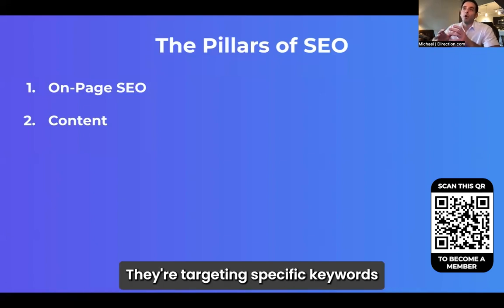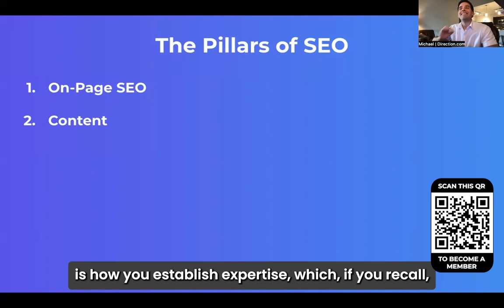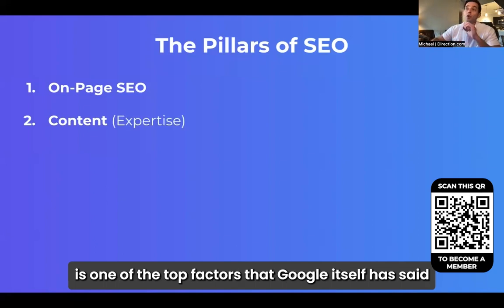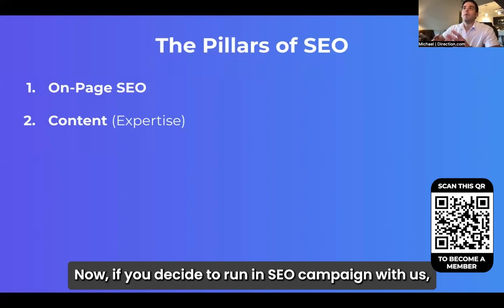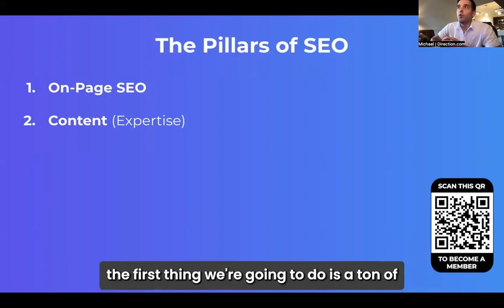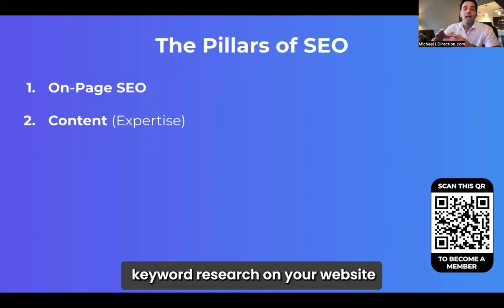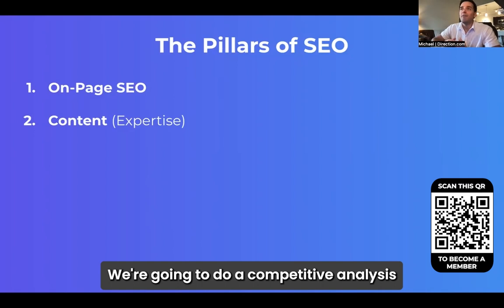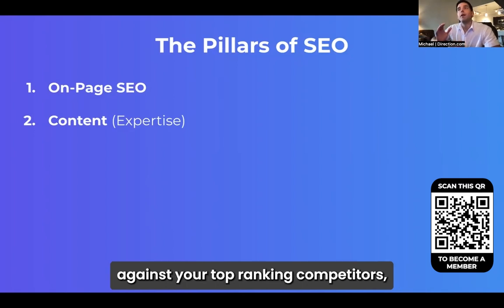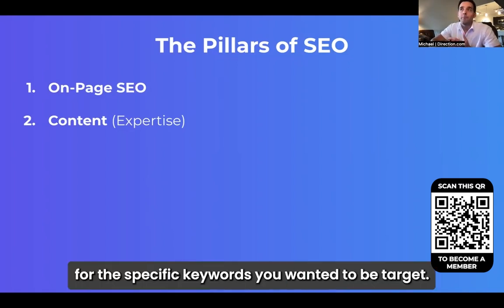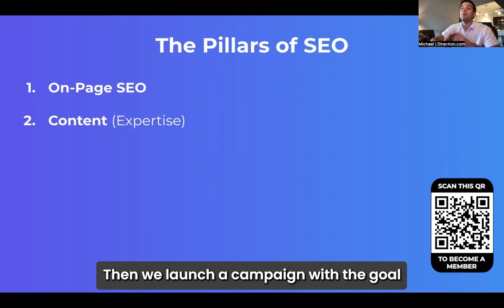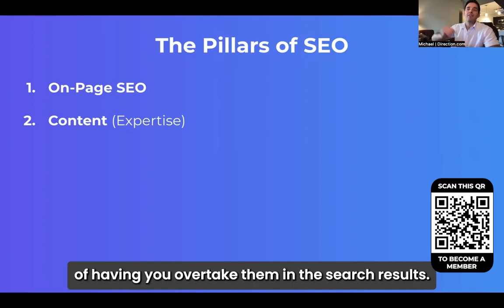Producing good content is how you establish expertise, which is one of the top factors that Google itself has said it uses to determine who gets into the top results. If you decide to run an SEO campaign with us, the first thing we're going to do is a ton of keyword research on your website. Before we even launch a campaign, we do a competitive analysis against your top-ranking competitors and reverse engineer how they're ranking above you for the specific keywords you want to target. Then we launch a campaign with the goal of having you overtake them in the search results.